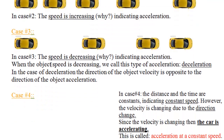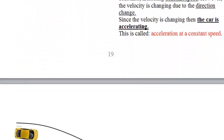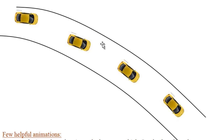In Case 3, the distance is getting smaller, which indicates the car is slowing down — traveling less distance every second. This is deceleration. In Case 4, the distance is constant and the time is constant. So does that mean zero acceleration? No — because the car is changing direction. Since there is a change in velocity due to the direction change, there is acceleration.